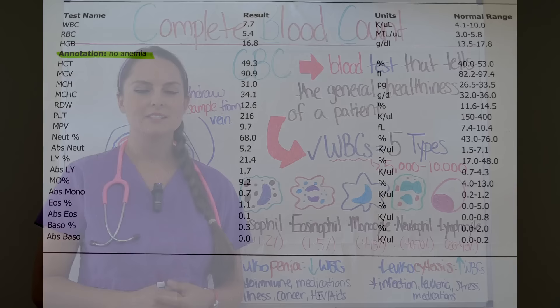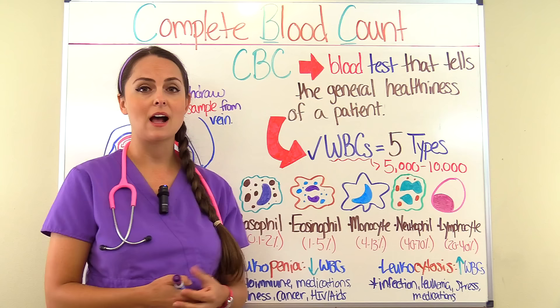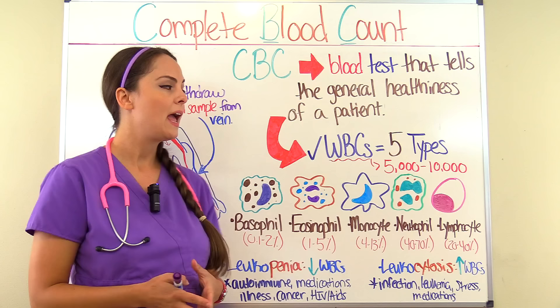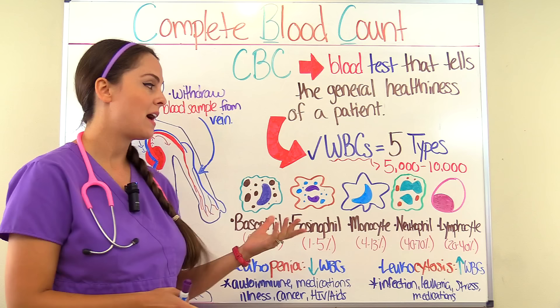First, let's talk about the white blood cell count — WBCs. They play a huge role with infection. Depending on what's going on with the patient, we can look at the five different types of WBCs, and this can give us an idea of what may be causing the patient an issue. A normal white blood cell count is about 5,000 to 10,000, and anything less than 5,000 would be considered leukopenia — a drop in the white blood cell count.